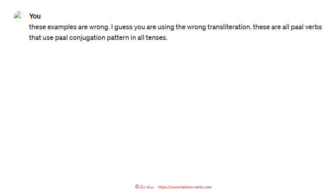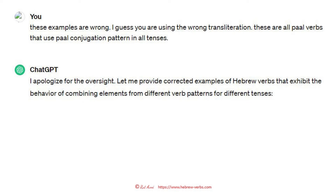I'm going back to ChatGPT and saying: 'These examples are all wrong. I guess you're using the wrong transliteration. These are all paal verbs that use paal conjugation patterns in all tenses.' And ChatGPT says: 'I apologize for the oversight. Let me provide corrected examples of Hebrew verbs that exhibit the behavior of combining elements from different verb patterns for different tenses.' What I really like about ChatGPT is this politeness — the politeness of this language model is just amazing.